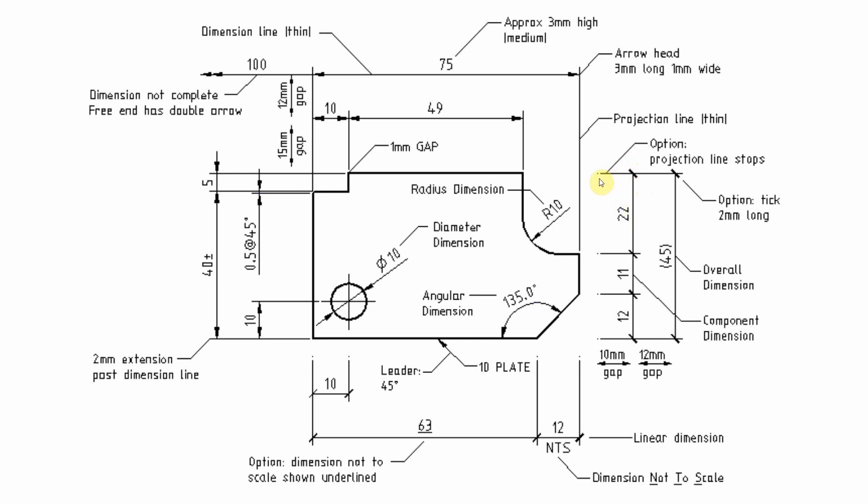Now for dimensions that cannot be drawn to their true termination point, the free end is terminated in a double arrow head. Here's an example of that. So 100 is out that way, the line is not complete, the free end has a double arrow because it continues. That's how you do that.